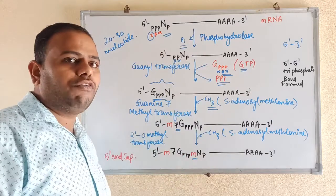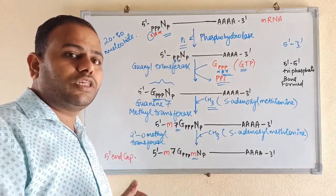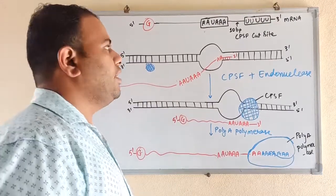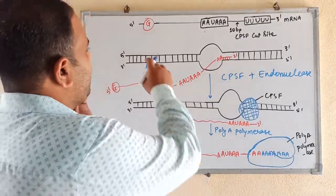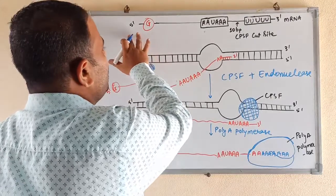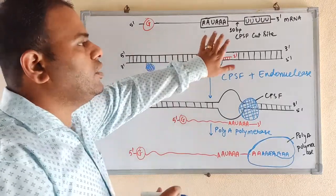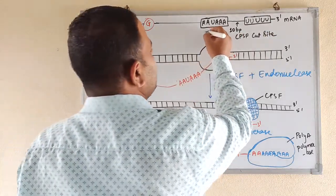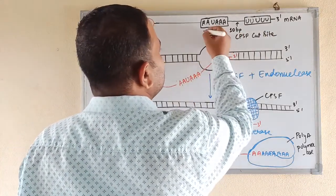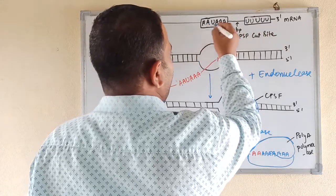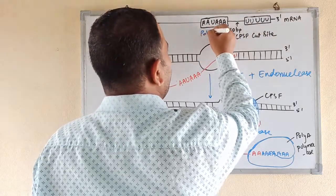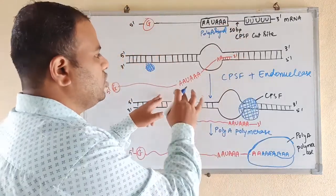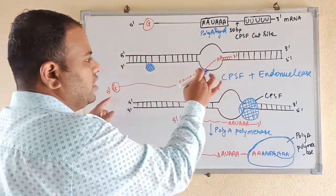Now let's see the process of tailing. The mRNA has the 5 prime guanyl cap already formed by the time mRNA synthesis is completed. There is a poly A signal — the poly A signal is AAUAAA, and this is regarded as the poly A signal in eukaryotes.